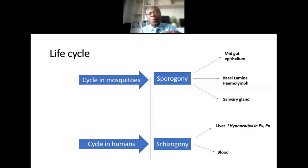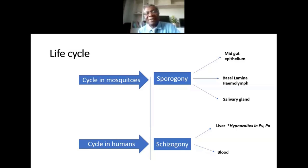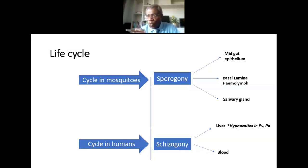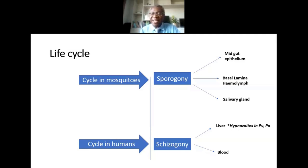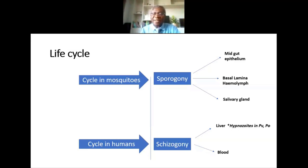The sporozoites travel through the vessel and enter the liver, passing through Kupffer cells until they find hepatocytes, where they develop. This process from deposition under the skin until the parasite finds its way into the hepatocytes is called schizogony. In Plasmodium vivax and P. ovale, some stages fail to develop further once they enter the liver. They remain there in the form of hypnozoites — dormant forms of P. vivax and P. ovale.